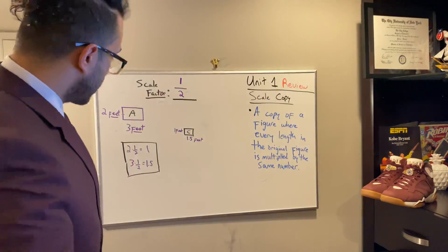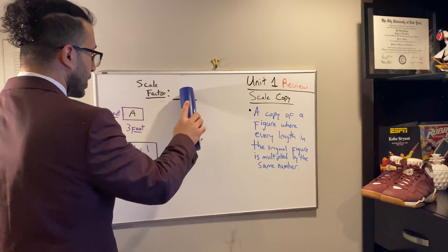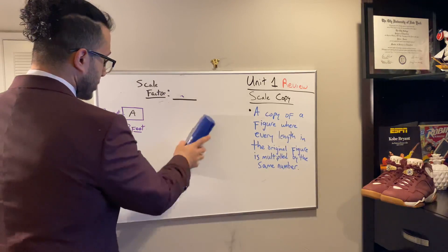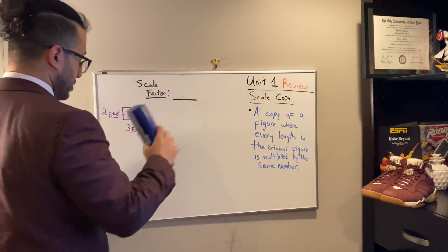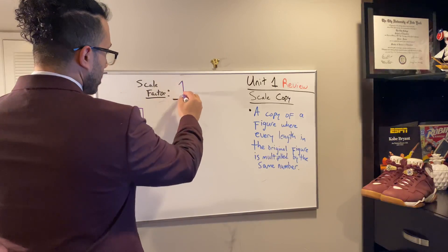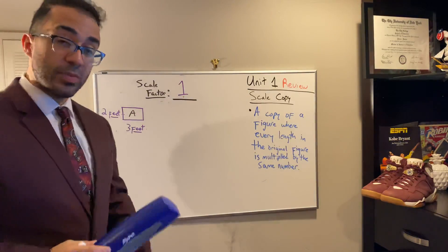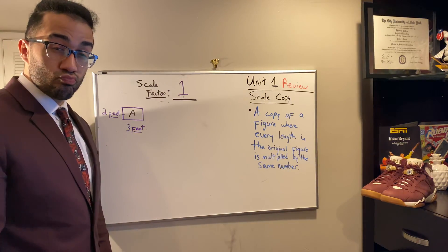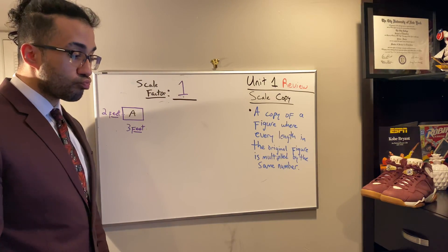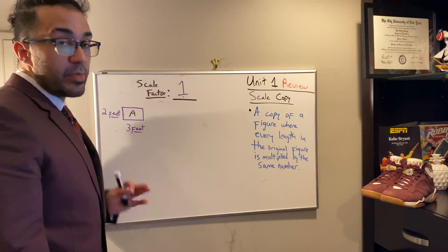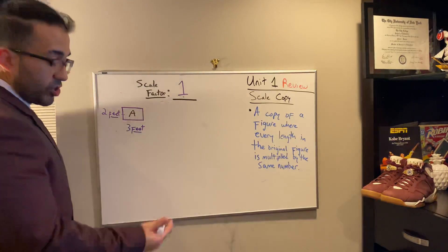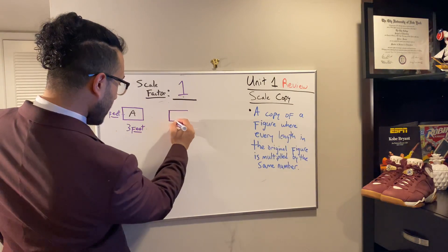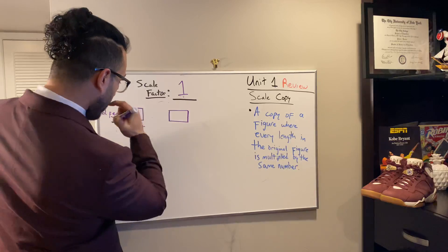One more example. Suppose the scale factor is one. What has to be true or what's going to be true about our new figure? It is going to have the same exact measurements of our original figure. So I'm going to try to draw a new one as close to the original as possible. I'm going freehand. It's not going to be perfect. It's actually pretty good.